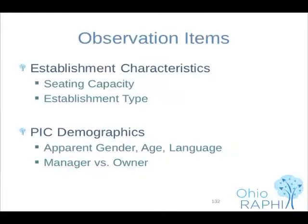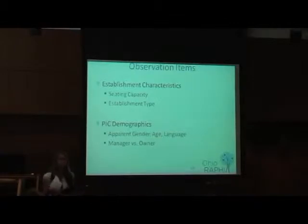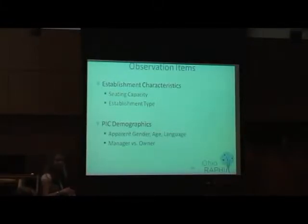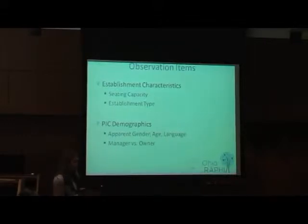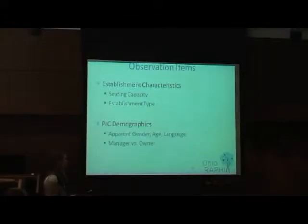More establishment characteristics: seating capacity — when you walk in, gauge how many seats are in the place or whether it's takeout only. The establishment being inspected: whether it's a national franchise, local franchise, fast food — just circle one choice. Then the person-in-charge demographics — that's the person the sanitarian initially says 'hi, I'm here to do an inspection' to, their main point of contact. So gender, approximate age, is the PIC the manager or owner? Also whether the PIC was speaking and understanding the English language, since communication issues can create conflict or additional problems.